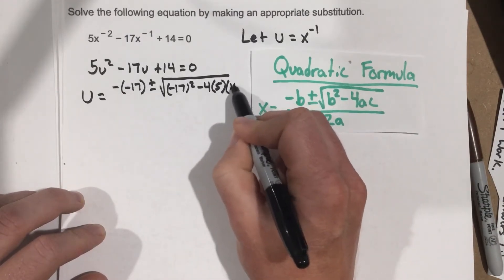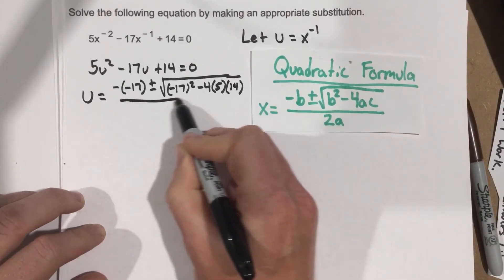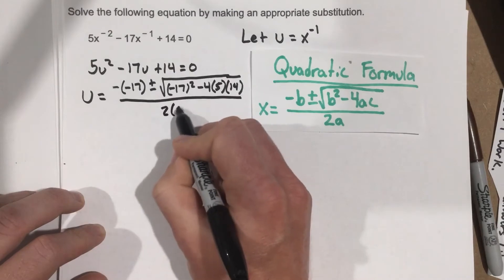times c, which is 14. And that's all going to be over 2 times 5.